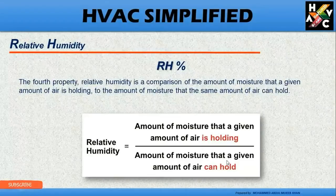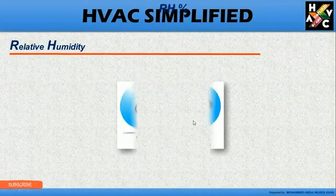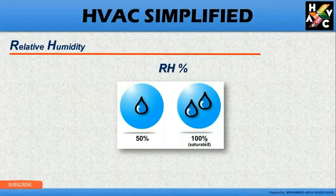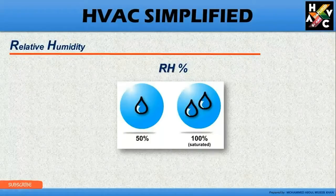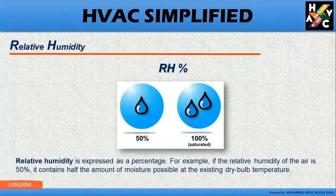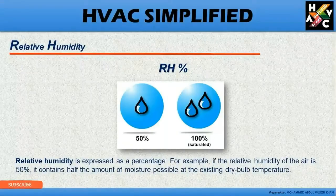At a particular temperature, relative humidity describes what amount of moisture the air is holding versus what it can hold. Relative humidity of 100% is known as saturated, where the air cannot hold any further moisture. For example, if the relative humidity of the air is 50%, it contains half the amount of moisture possible at the existing dry bulb temperature.